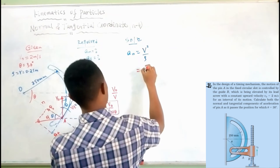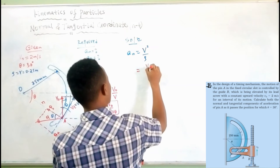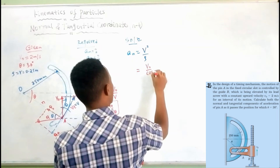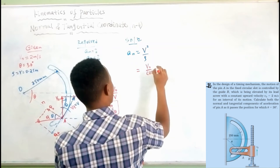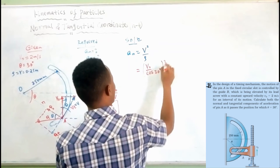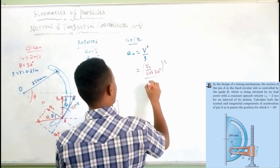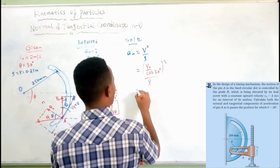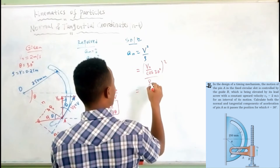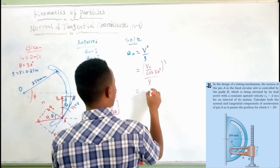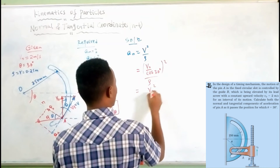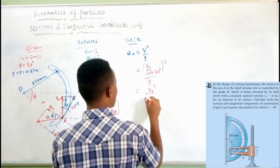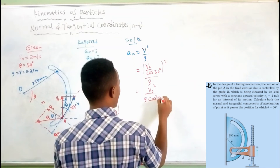v0 over cos 30 degrees. v0 squared over rho. v0 squared over rho, times cos squared theta.